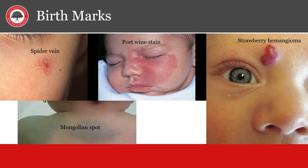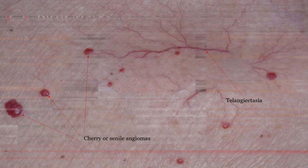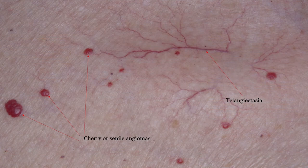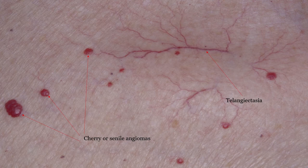There are various birthmarks seen on infants and young children. Spider veins are visible blood vessels that go away. Strawberry hemangiomas are also not permanent vascular tumors. Mongolian spots will vanish with time and look like bruising on the backside of the infant. Port wine stains are permanent and fortunately very rare. Cherry angiomas, also known as senile angiomas, are raised, red, solid papules that form as we get older on sun-exposed skin and are benign. Telangiectasias are blood vessels that come close to the surface of the skin as we age and the skin thins; they can also form in persons who use alcohol and develop alcoholic liver disease.